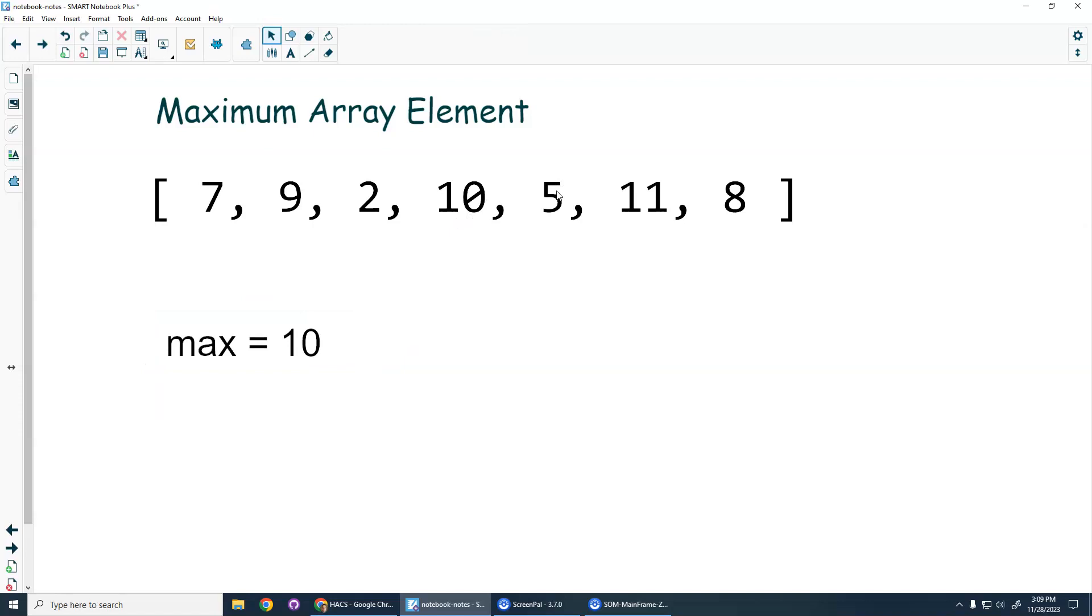All right, and then we go to the five. No, that's not bigger. Then we go to the eleven, yep, that's bigger. And we change this to an eleven. And then the eight is not larger, and then I'm at the end of the loop. I've checked every element, so I'm guaranteed that eleven is my maximum.